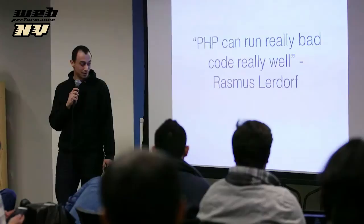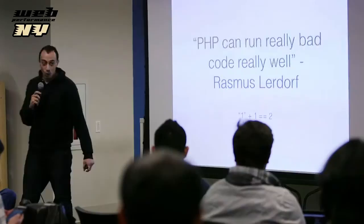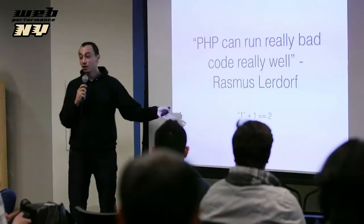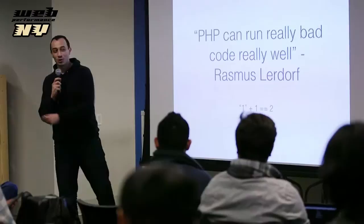What Rasmus means is something like this: you can take the string 'one', add it to the integer one, and get the result two in PHP. In any other language, you'd get a disparate type error. PHP is not alone in having quirks.